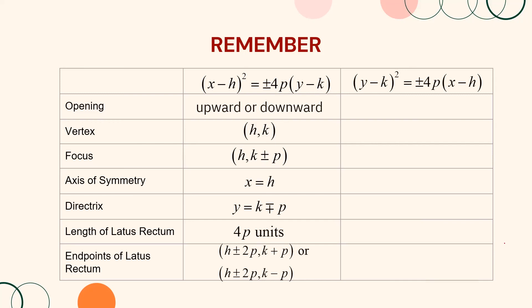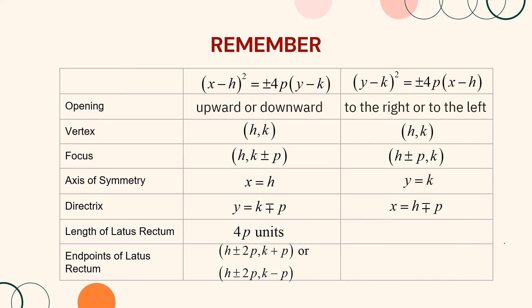On the other hand, if your parabola is in the form (y minus k) squared equals plus or minus 4p(x minus h), then your parabola opens either to the right or to the left. The vertex is at (h, k). The focus is at (h plus p, k) or (h minus p, k). The axis of symmetry is y equals k. The directrix is x equals h minus p or x equals h plus p. The length of the latus rectum is 4p units. The endpoints of the latus rectum are (h plus p, k plus or minus 2p) or (h minus p, k plus or minus 2p).